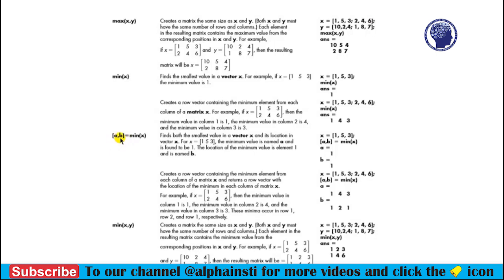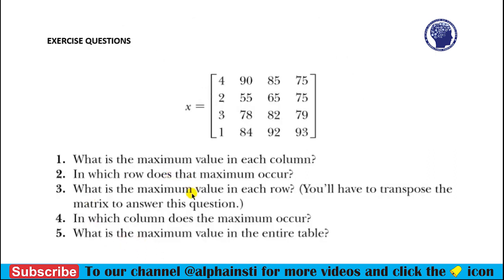Similarly, the minimum function finds the minimum value in a vector or in a matrix. Here we have defined two variables a and b, working in a similar way as already discussed: variable a contains the minimum value and variable b contains the location of that minimum value. The last form is min(x, y), and if we have defined two different matrices then the results will be the minimum value of matrix x and minimum values of matrix y.